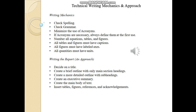So first decide on a title, then create a brief outline with only the main section headings. At this moment you don't have to write anything in those sections — just put the headings. The third step is to create a more detailed outline with subheadings. Each section will have subheadings which will contain the majority of detail. The fourth step is to create an executive summary, which is your abstract — this has already been discussed in the previous slides.